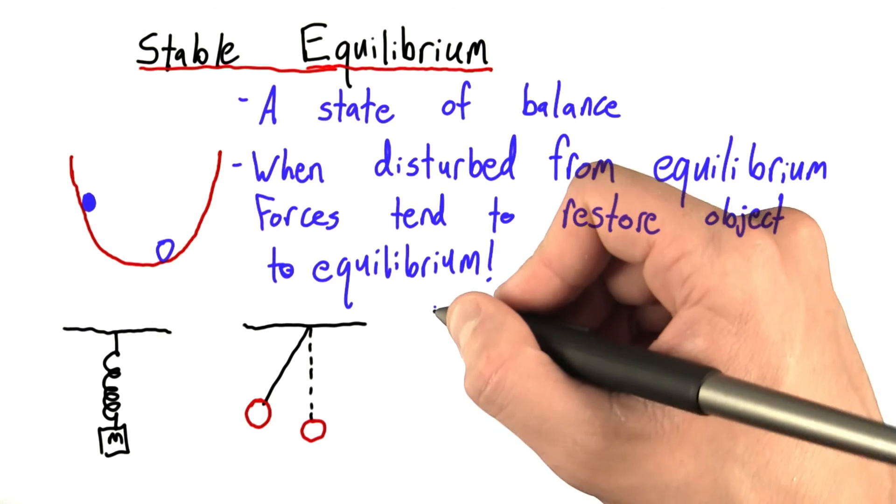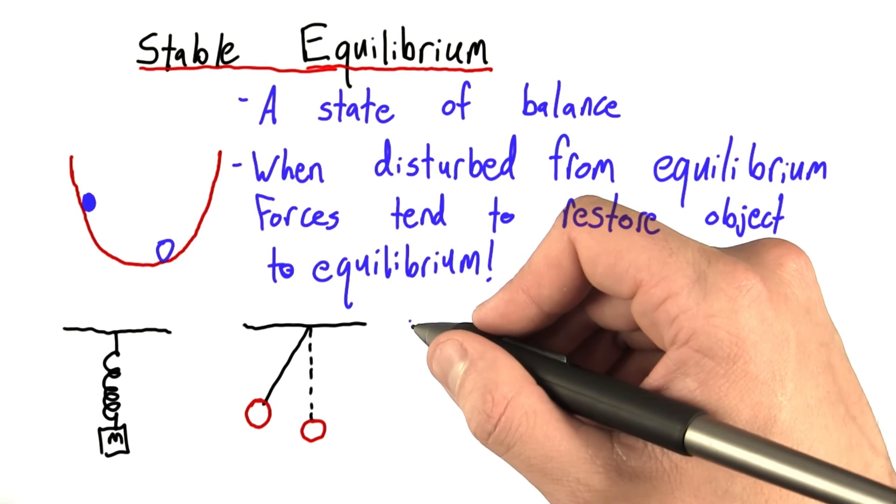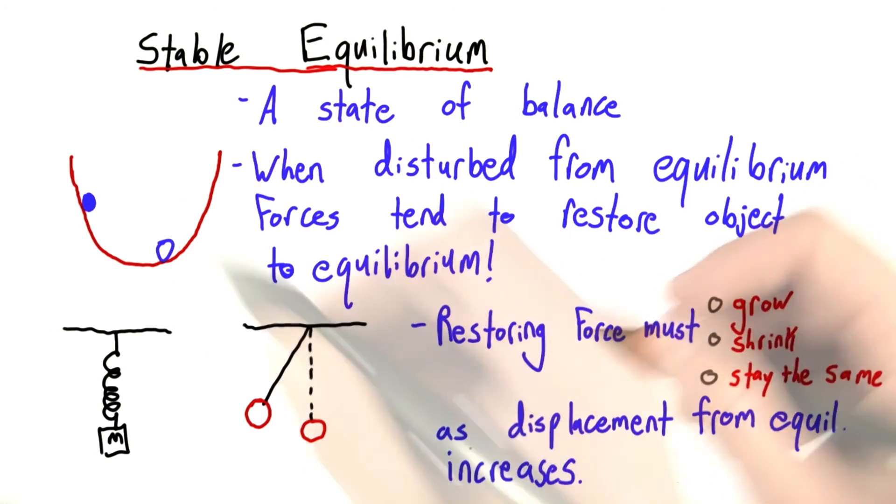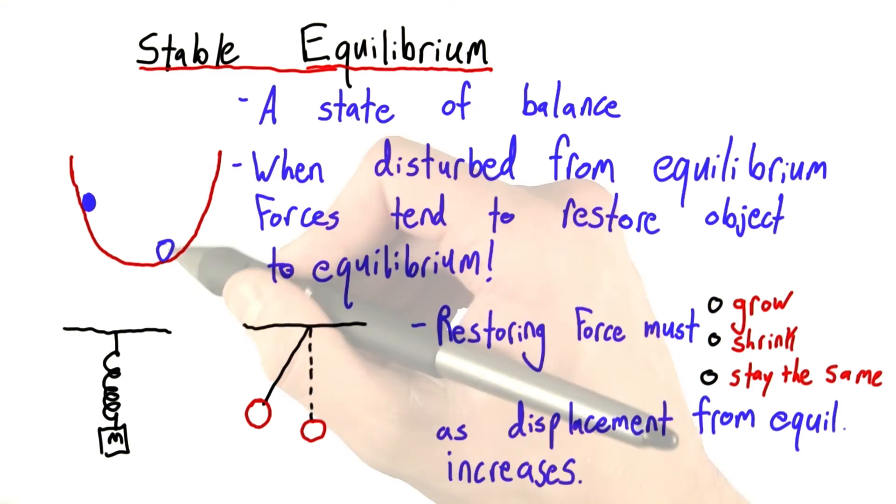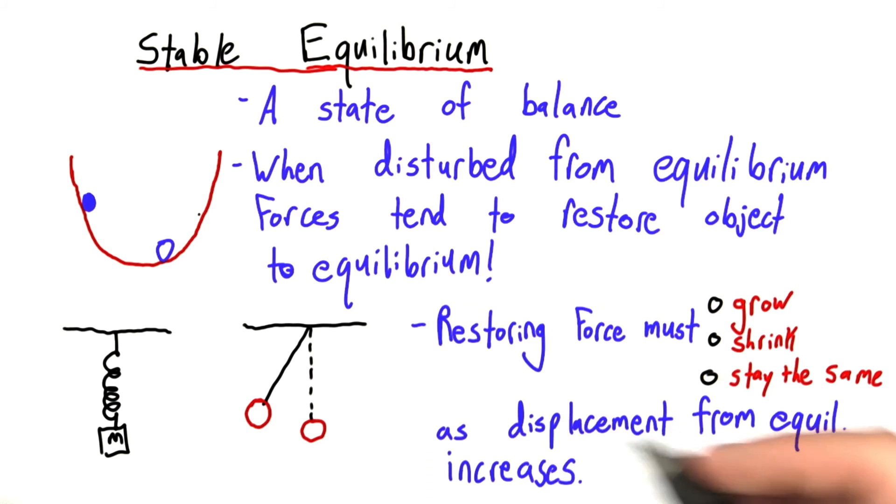There's one more key point for simple harmonic motion, a criteria that must be fulfilled if we're going to get the isochronous periodicity that we want. And this one I want you to complete for me. As I move this ball further and further up the hill, further from equilibrium, does the force tending to push it back increase, decrease, or stay the same?